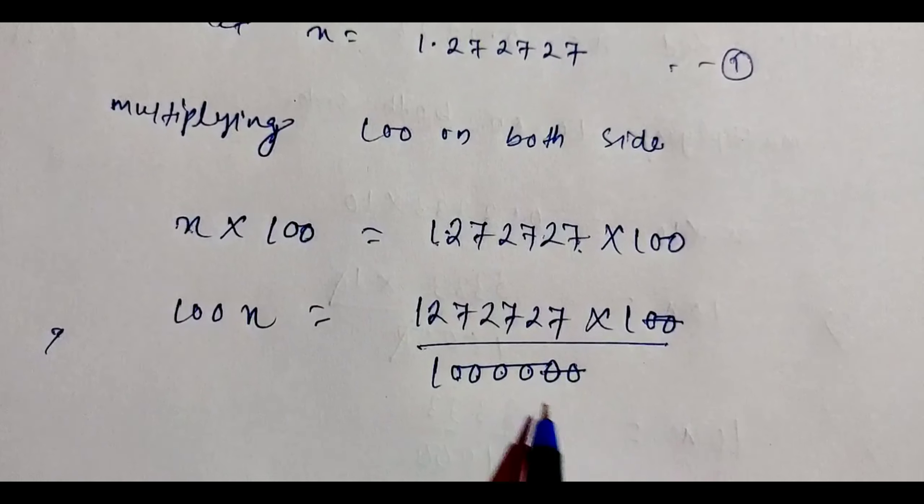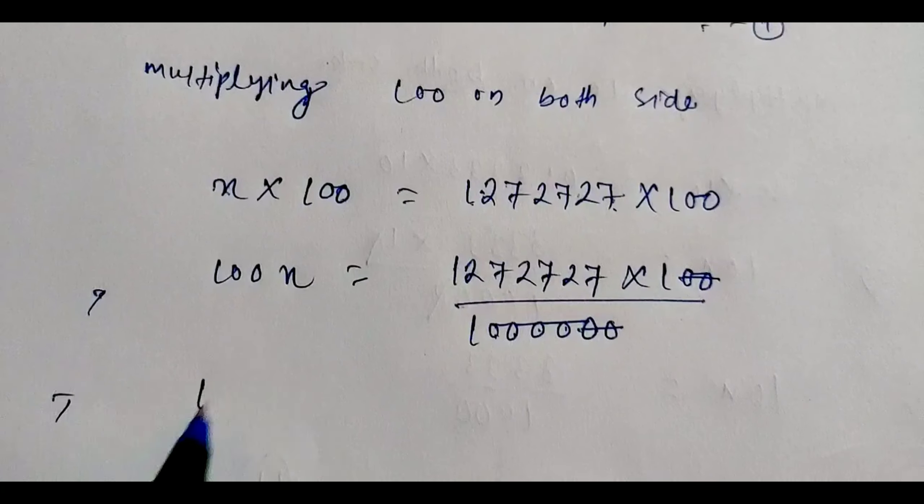Here, two zeros cancel with two decimal places, leaving 100x equal to 127.2727... We place the decimal carefully so the repeating part 272727 continues. This gives us equation two: 100x = 127.2727...